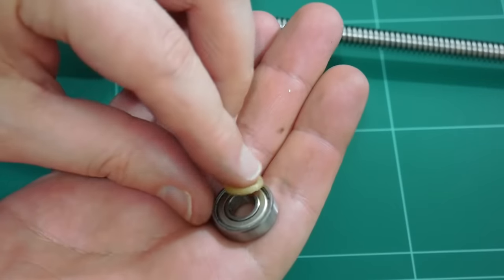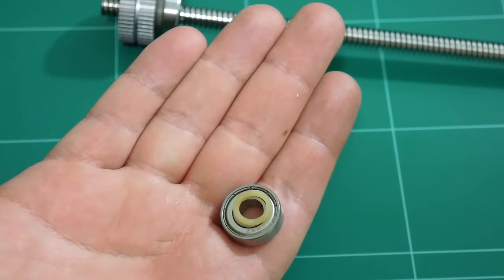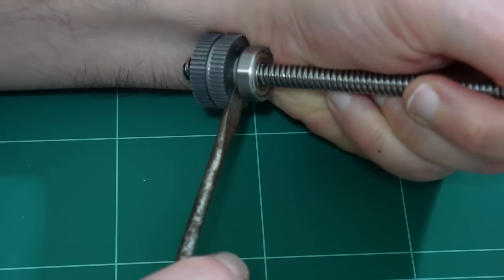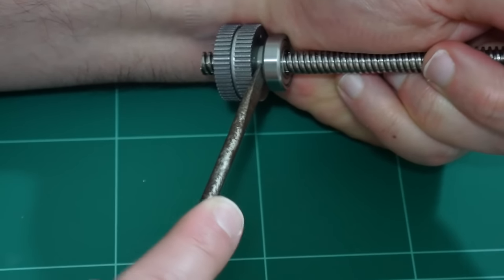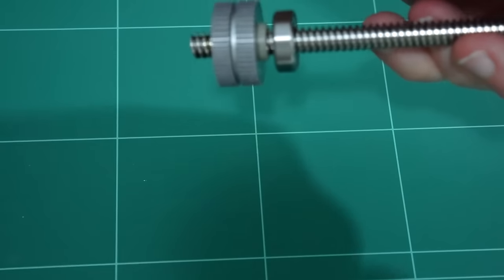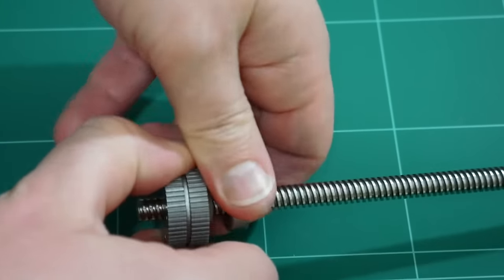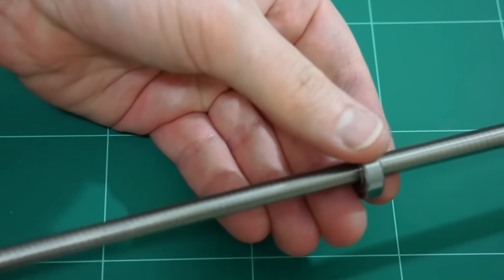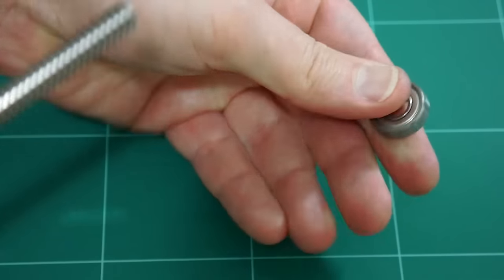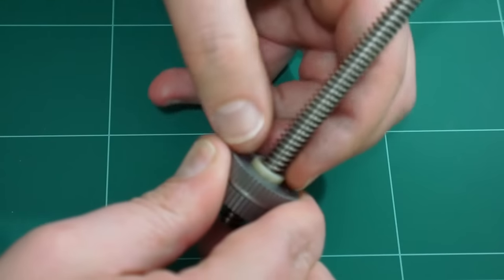We also have a nylon washer in there as well. Give it a twist again. We just want to move that bearing up ever so slightly with each rotation. And eventually, there it is, it'll give way. And that can slide off. And there's also a nylon washer on here as well. We want to pull that off too.